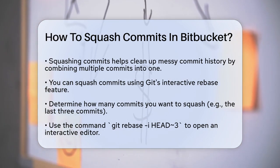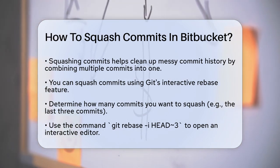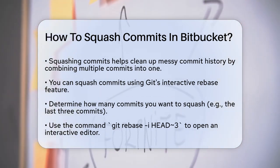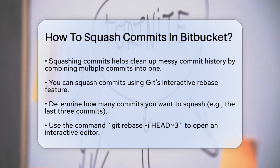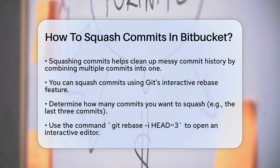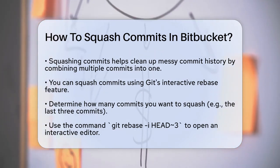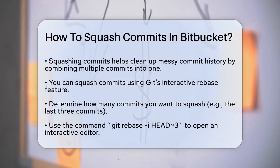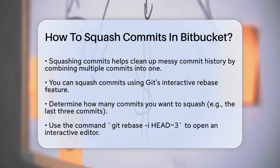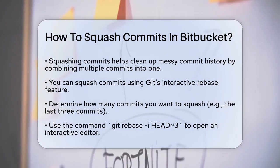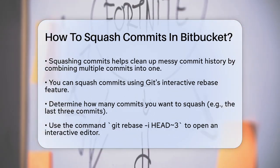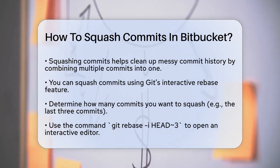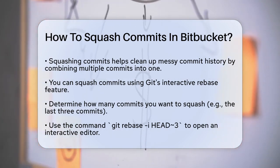One way to do this is by using the interactive rebase feature in Git. Here's how you can do it. To start, you need to determine how many commits you want to squash. For example, if you want to squash the last three commits, you would use the command git rebase -i HEAD~3.